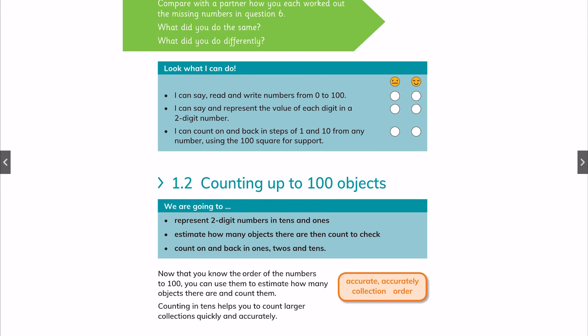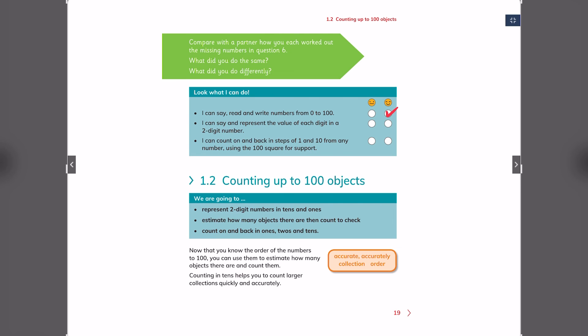Here are some things that you should ask yourself. I can read and write numbers from 0 to 100. Can you do that? If you can, you are ticking a happy face. I can say and represent the value of each digit in a two-digit number. If you can do that, tick that too. I can count on and back in steps of 1 and 10 from any number, using the 100 square for support. If you can do that and have that skill, tick that too.